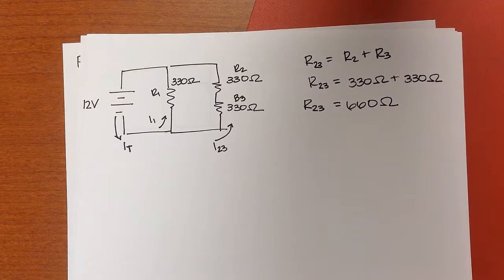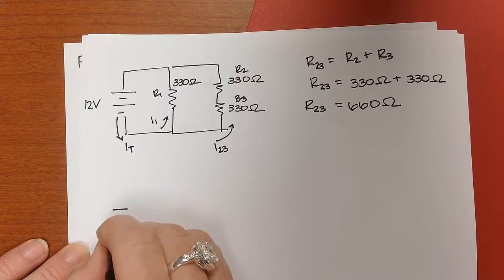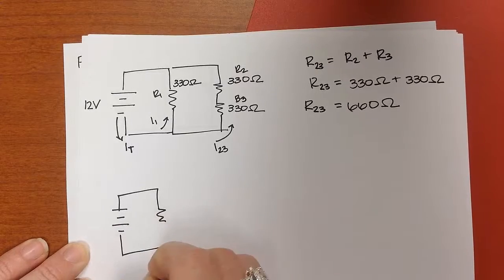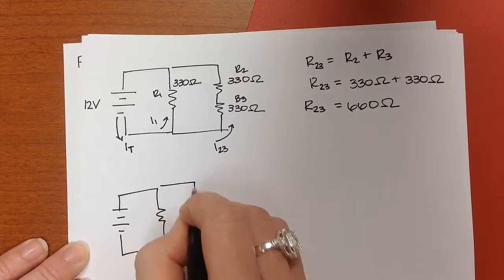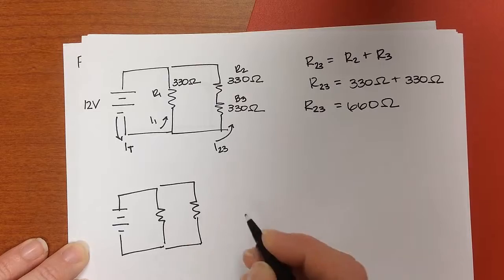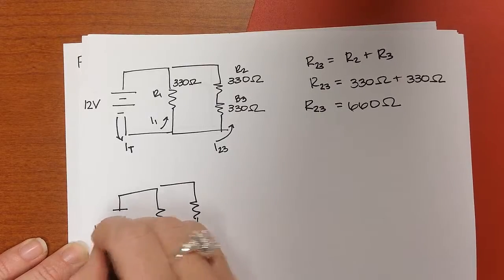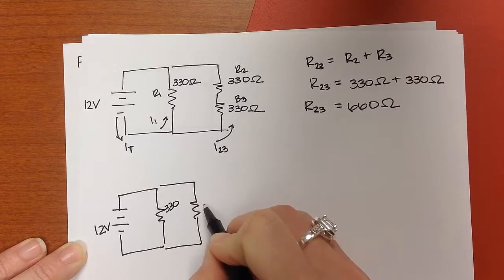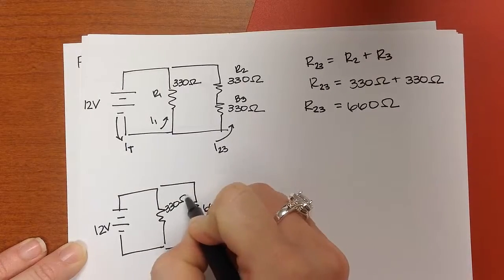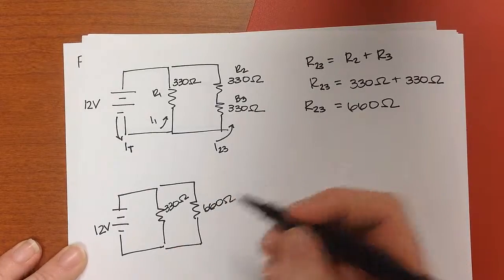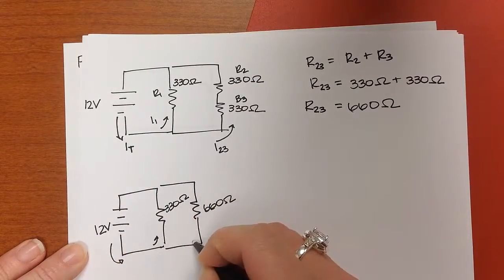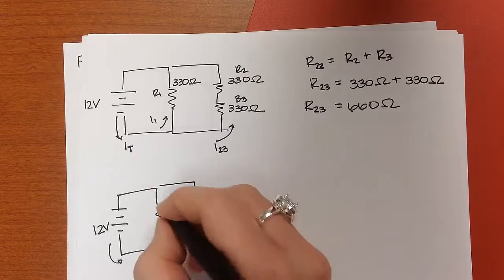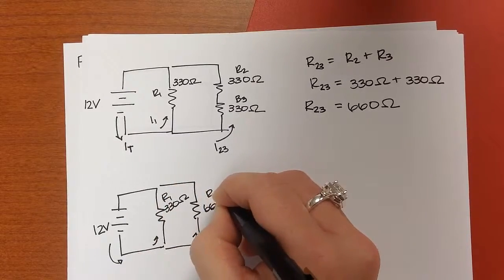So now we've made the circuit look like this. 12 volts here, 330 here, and 660 here. And the current is going to flow out here, then split. Now these two are in parallel. So R1 and this is what we'll call R23.